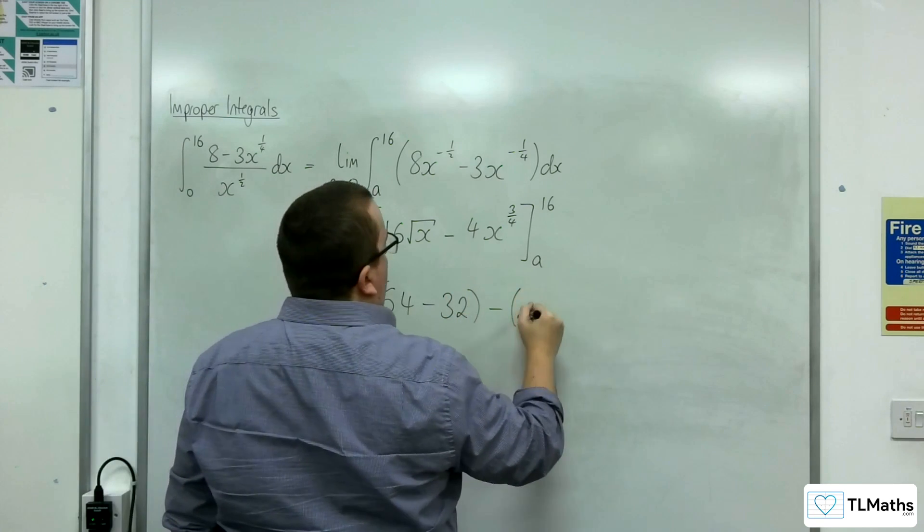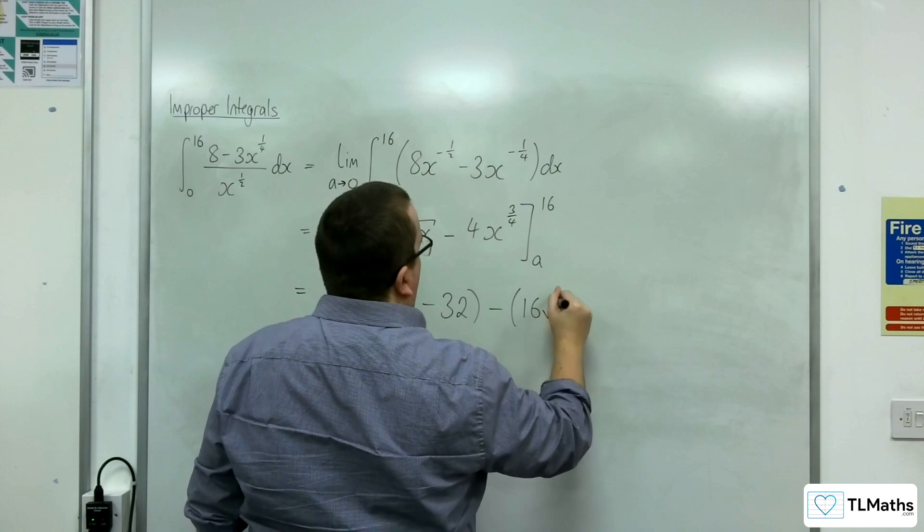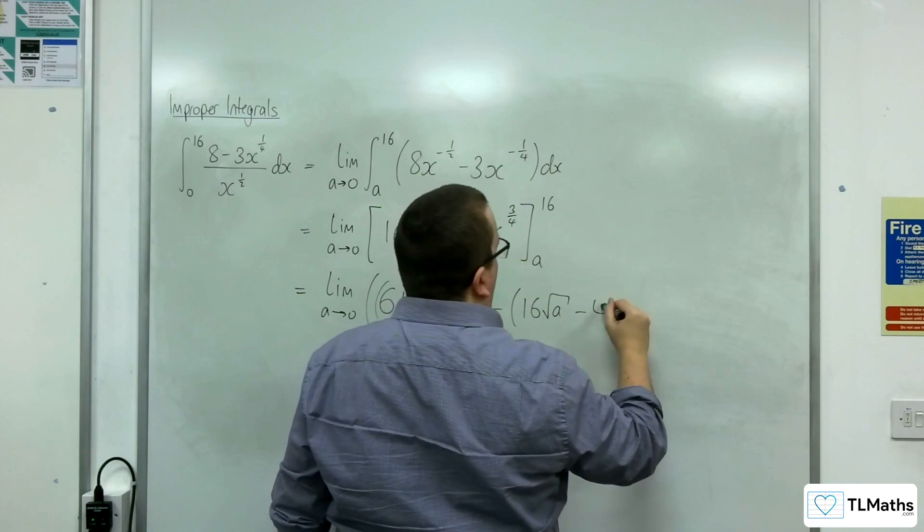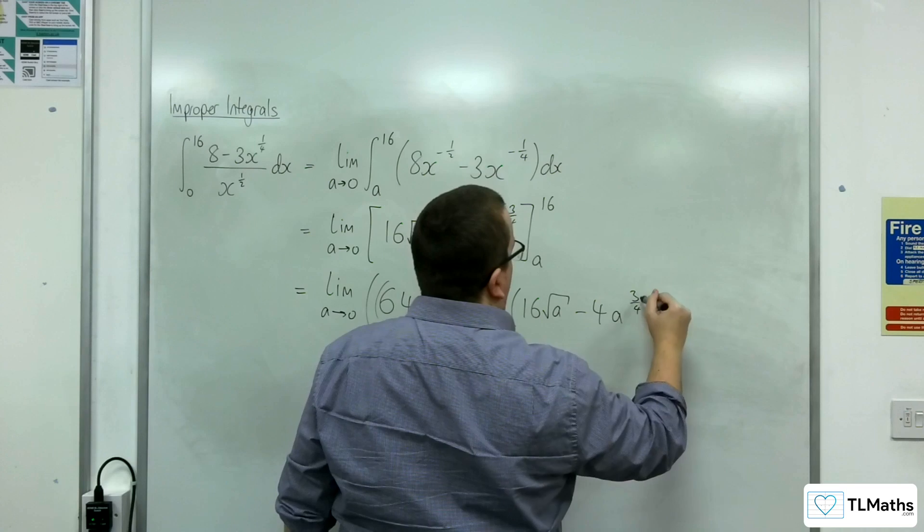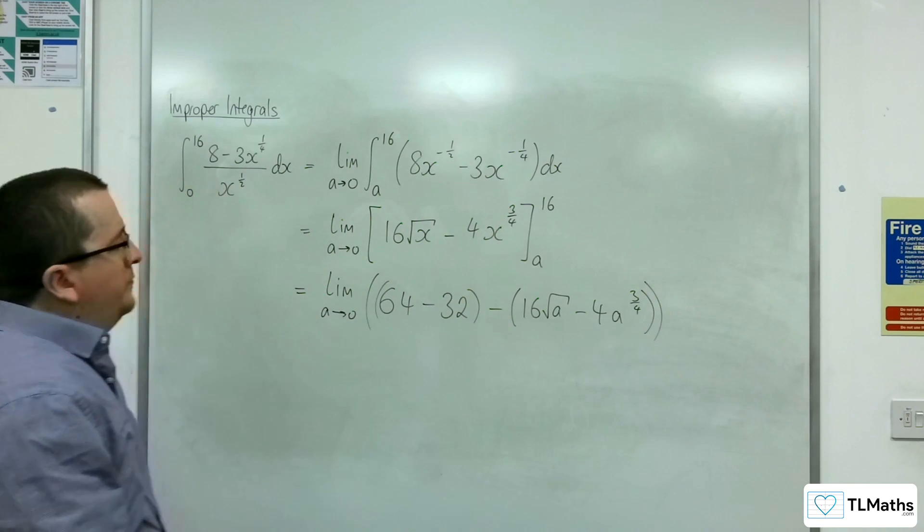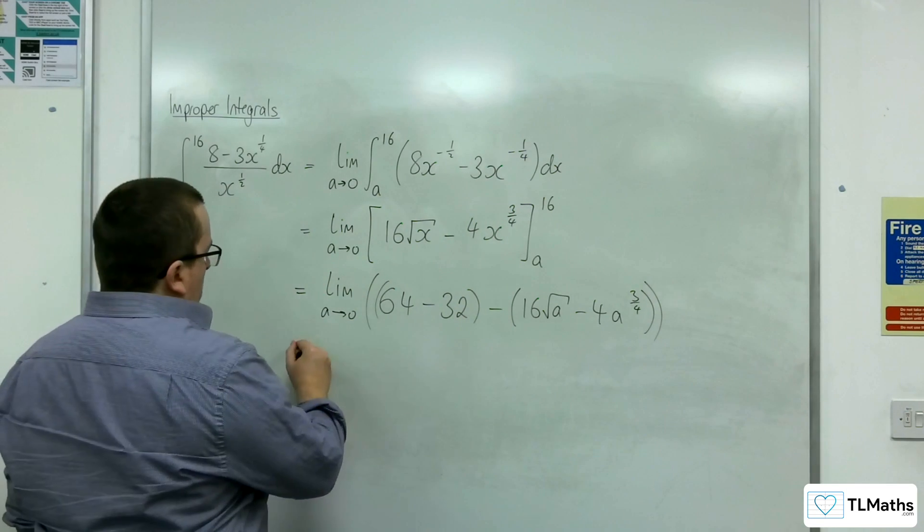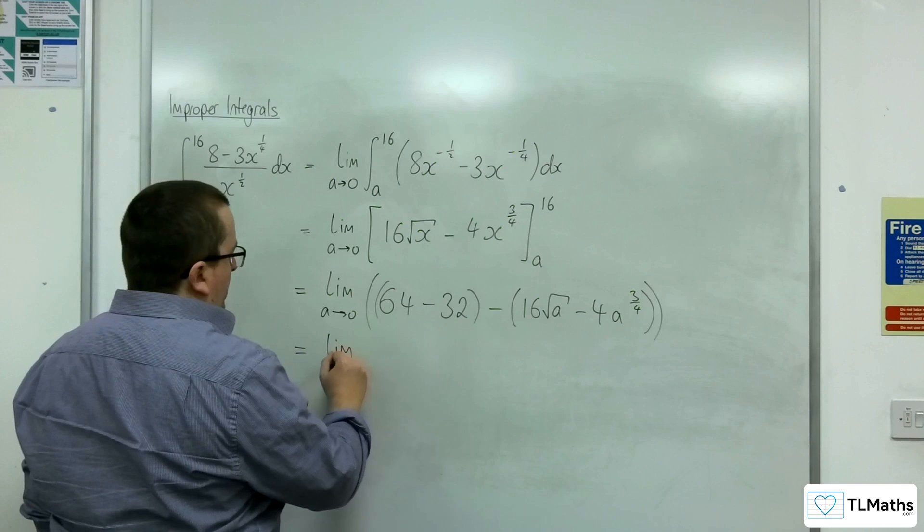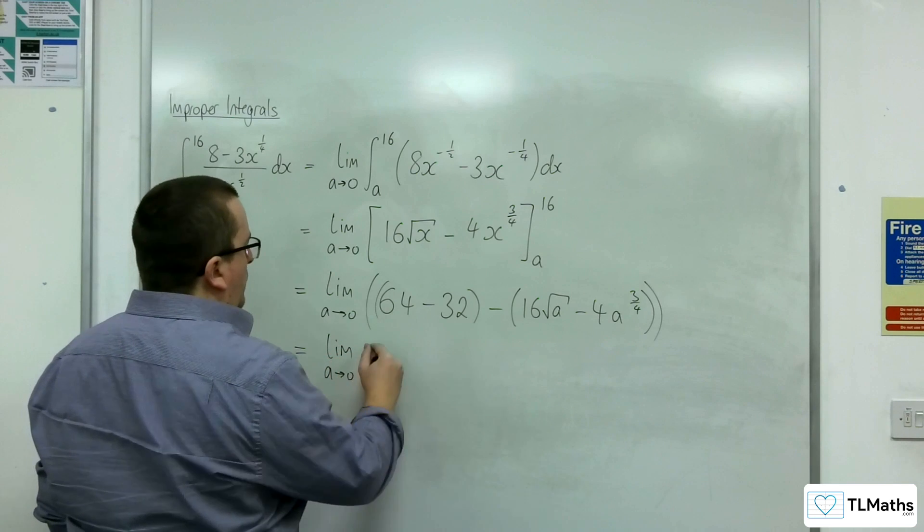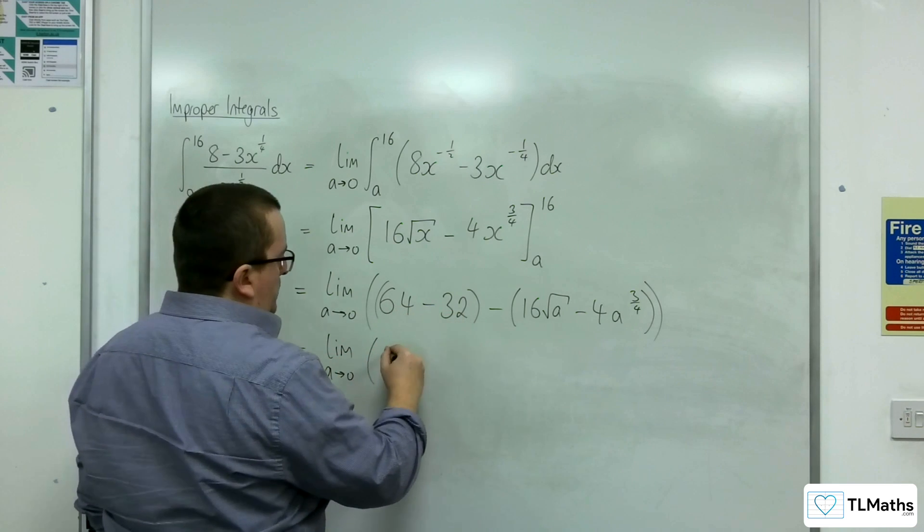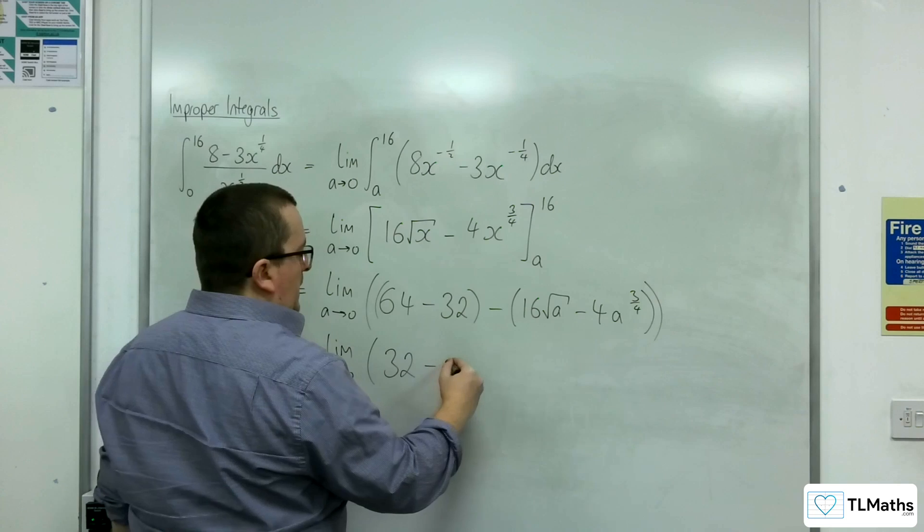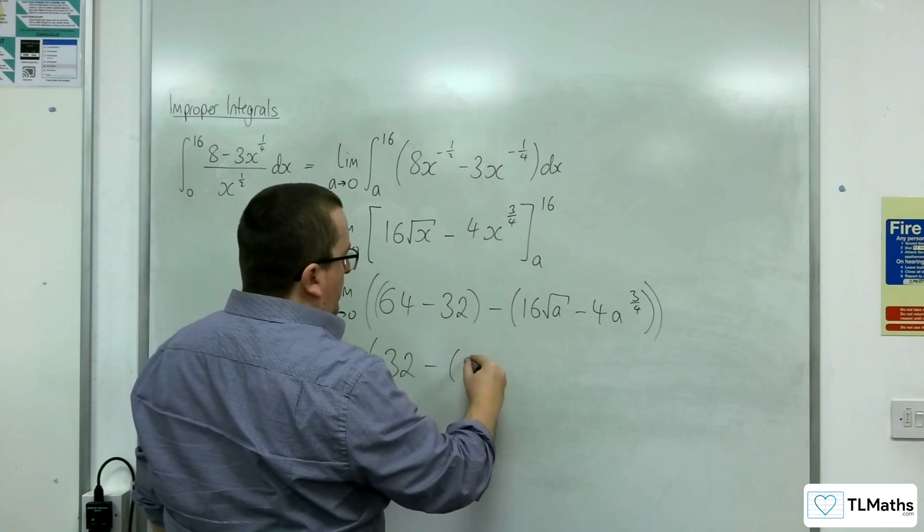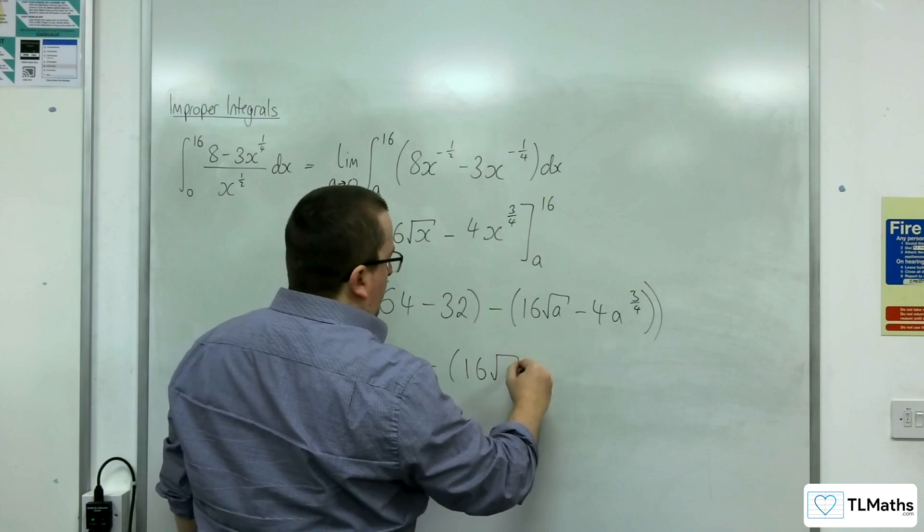and take away, substituting the a in now, we get 16 root a, take away 4a to the 3 quarters. And so this is going to get us the limit as a tends to 0. 64 take away 32 is just 32. And we've still got this here, which I'm not going to try and simplify any further.